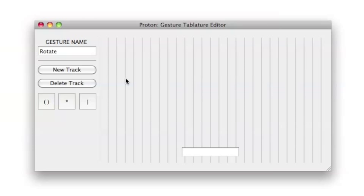To build a gesture tablature, the developer first needs two touch tracks, one for each finger. Each track has a green touch down node and a red touch up node.